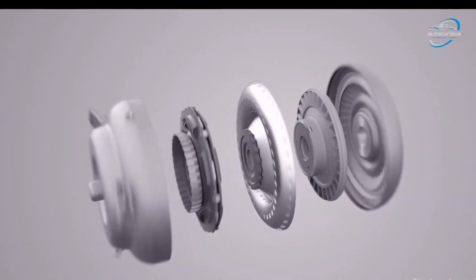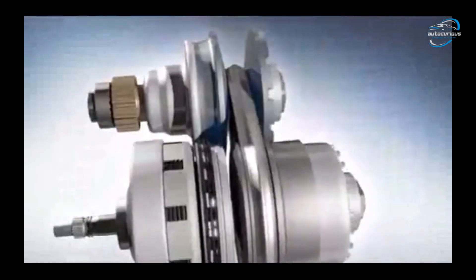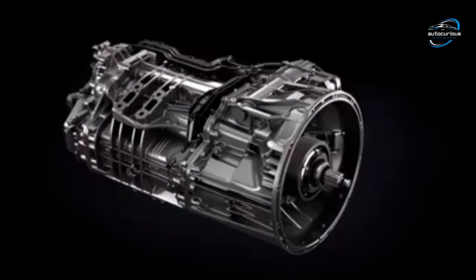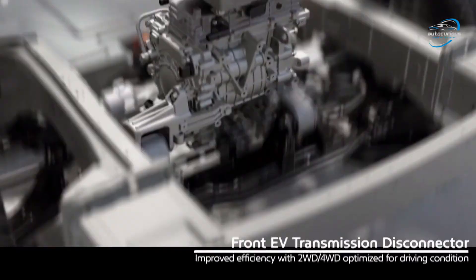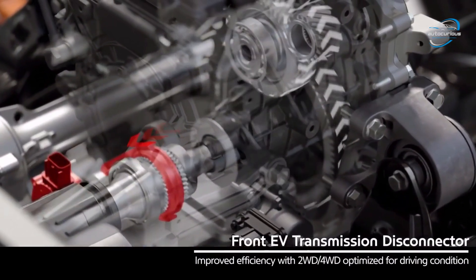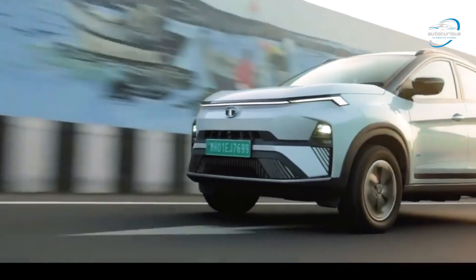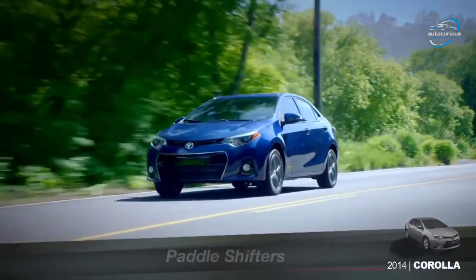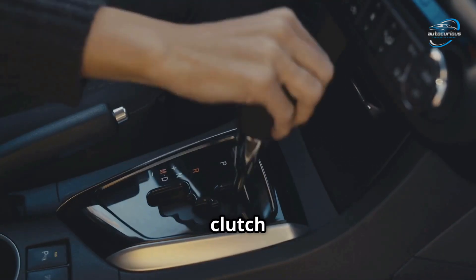So, there you have it, many types of automatic transmission. Number first is the torque converter AT, smooth and reliable. Number second is CVT, fuel efficient and seamless. Number third is DCT or DSG, fast and sporty. Number fourth is AMT, budget friendly and practical. Number fifth is IMT, manual fun with the comfort of automatic. And number six is EV single speed with instant power. Each has its place, the best one for you depends on your daily driving style, budget, and preferences. If you are a performance lover, go for a DCT. If you want smooth city drives, the CVT is great. If you want to save money, then go for AMT or IMT.